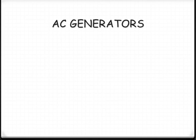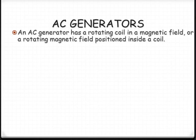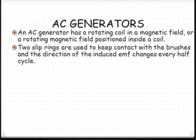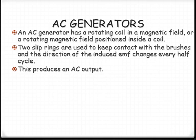The principal features of an AC generator include: a rotating coil inside a magnetic field, like the DC motor — or alternatively, we rotate the magnetic field inside the coils. We use slip rings which keep contact with the brushes. Every half cycle, the EMF will change its direction. The AC output — alternating current — changes direction every 180 degrees of rotation. The result is an output that varies sinusoidally, producing a sine curve.